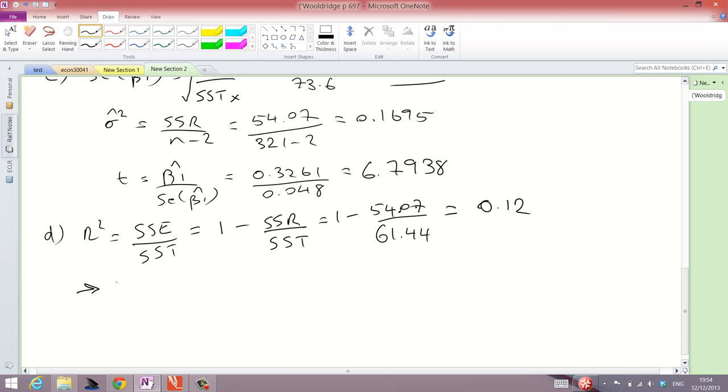And this means that around about 12% of the variation in L price can be explained by the model. Not that high, but this is a relative concept, so all we can say is that 12% is explained. So that's the end of question one.